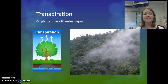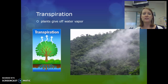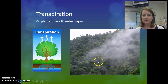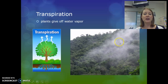Transpiration is when plants give off water vapor. Remember that water vapor is one of the byproducts of photosynthesis, where plants are taking carbon dioxide and converting it into oxygen. So one of the other outputs is also water vapor. The picture here shows transpiration from the leaves in a rainforest.